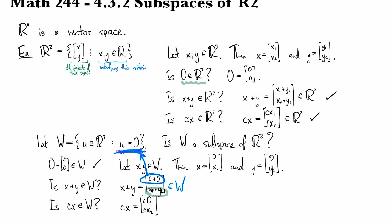So then we look at this one and say, okay, so is cx an element of w? And you say, well, c times x1 is equal to 0.